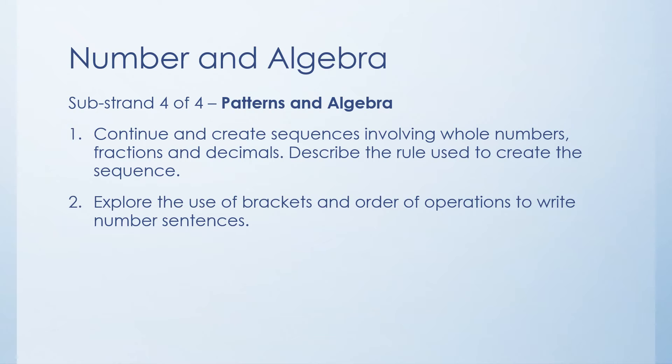And then the final substrand within number and algebra is continue and create sequences involving whole numbers, fractions and decimals. So it's just really doing number patterns and then you've got to describe the rule used to create the sequence. So you'll get practice of this with both fractions and decimals. So an easy fraction one would be one quarter, two quarters, three quarters, one whole. You're going up by a quarter every time. And then you can have a decimal equivalent such as 0.2, 0.4, 0.6, 0.8. You're going up by 0.2 every time.